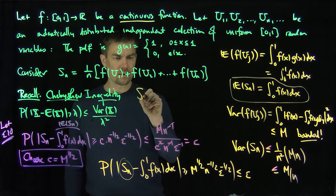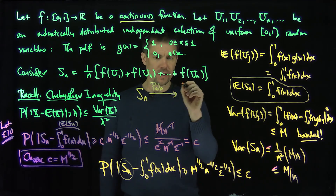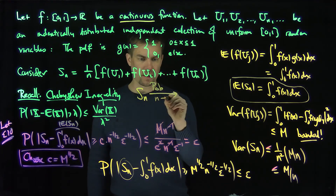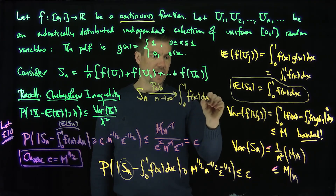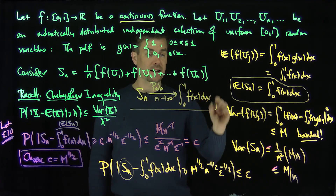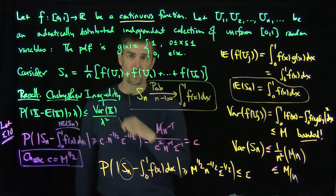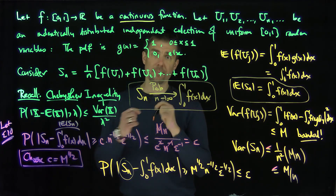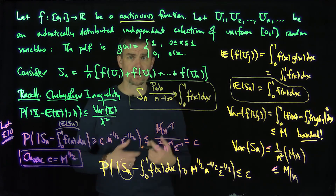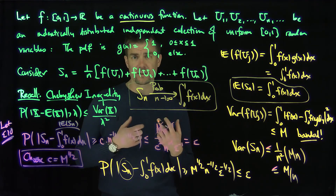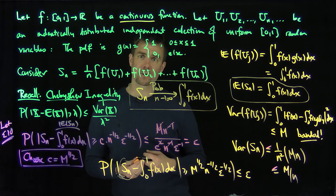And that's the basic idea behind Monte Carlo integration. If I can simulate a uniform random variable between 0 and 1 independently n times and average those values, that will get closer and closer to the actual integral from 0 to 1 of f dx, which is the average value of the function over the interval. Thank you very much.